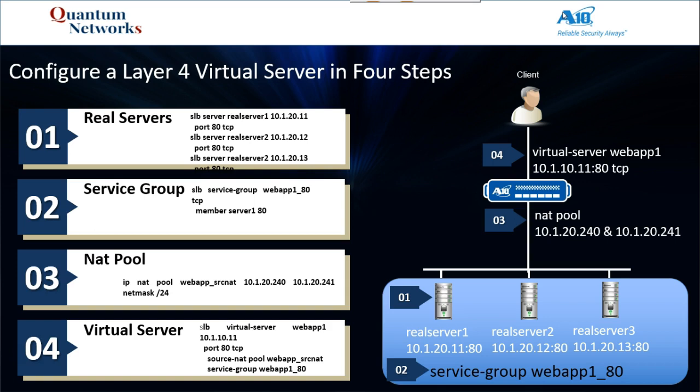Let's also take a quick look at the drawing on the right. A client will make a connection to the outside interface of the A10, and connect to the virtual server on IP address 10.1.10.11 on port 80. On the inside of the A10 appliance, I'm using a NatPool — so basically either 10.1.20.240 or .241 will actually make a separate connection to the real servers themselves and appear local on that subnet.